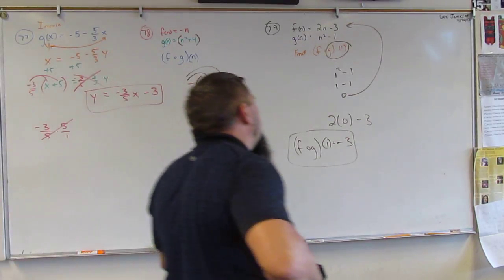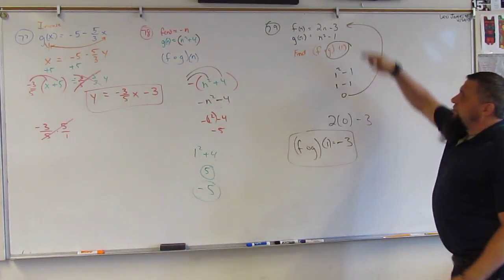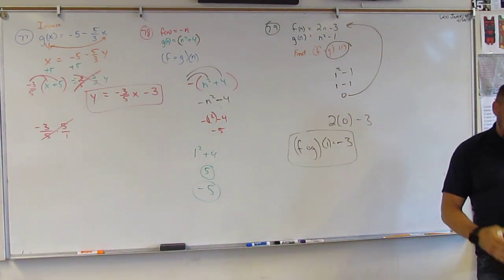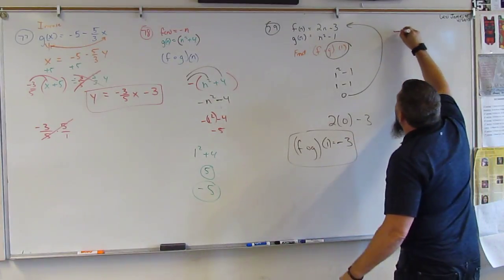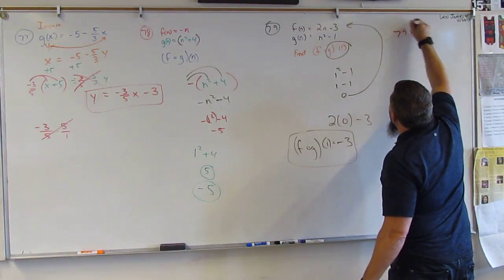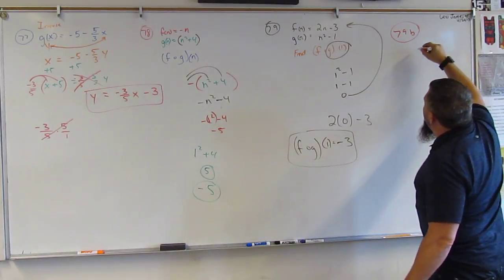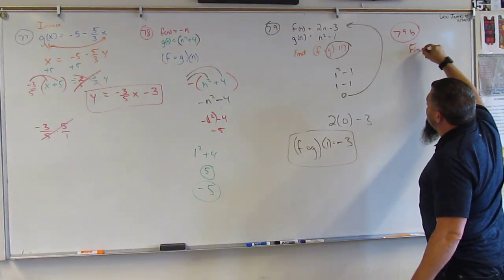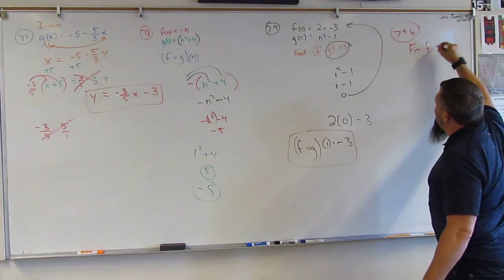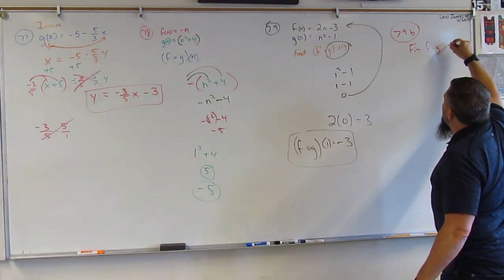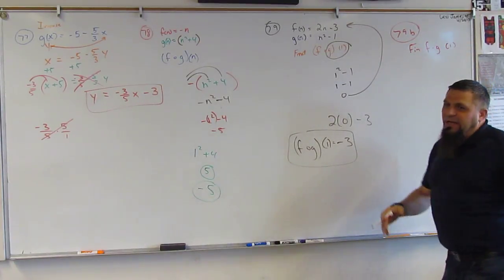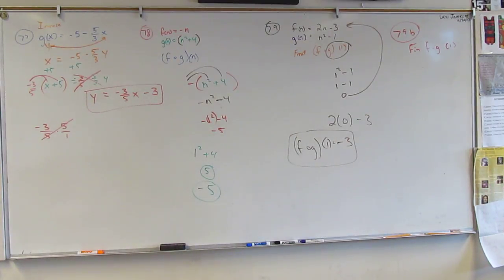Now, that is totally different than what they had you, what they really wanted you to do. Remember? 79B. Because I wanted to show you a different one, right? But in 79B, they said find F times G of 1.